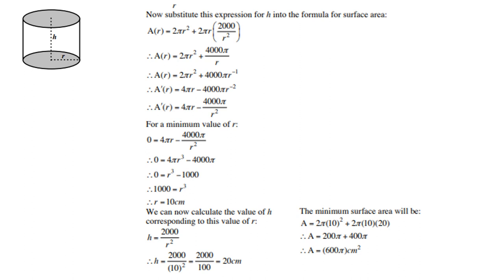For a minimum value of r, let the derivative be 0. What you can do next is cross multiply. Then divide both sides by 4π. Then take the 1000 over to the left-hand side, and then find the cube root of 1000, which is 10 centimeters.